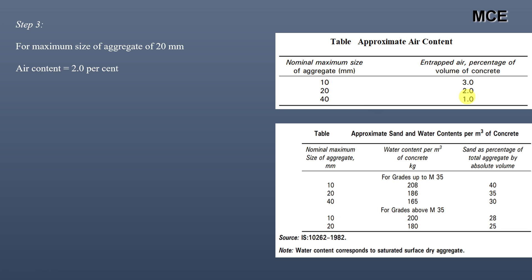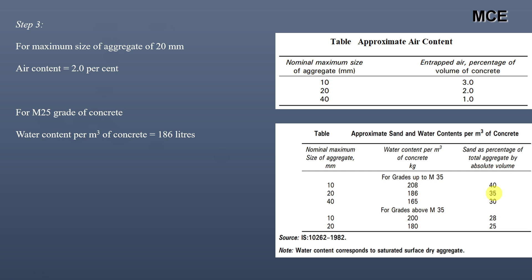From the IS code table for M25 grade concrete with a nominal maximum aggregate size of 20 mm, the initial water content is 186 kg/m³ and sand as a percentage of total aggregate by absolute volume is 35%. This table applies to standard conditions: angular aggregate, maximum water-cement ratio of 0.5 for grades up to M35, and compacting factor of 0.8.